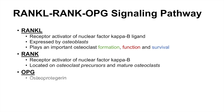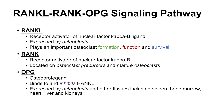OPG stands for osteoprotegerin, and this protein is also expressed by osteoblasts. It binds to and inhibits RANKL, acting as a regulator of the RANK ligand. It is expressed by osteoblasts but also by other tissues including the spleen, bone marrow, heart, liver, and kidneys. Because it inhibits RANKL, it is protective against bone loss.